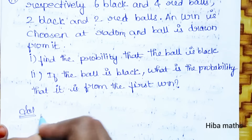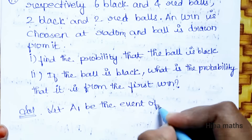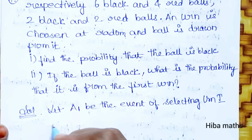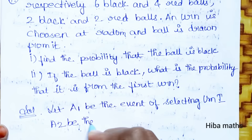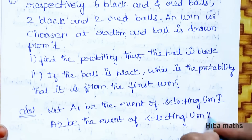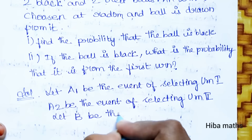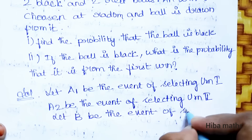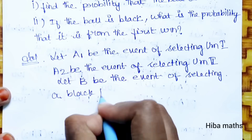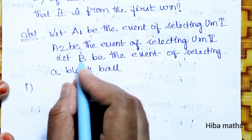Let A1 be the event of selecting Urn 1, and A2 be the event of selecting Urn 2. Let B be the event of drawing a black ball.